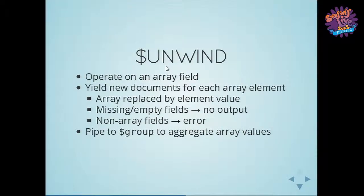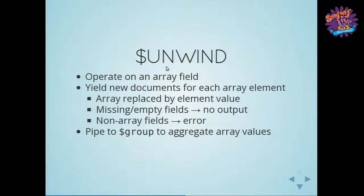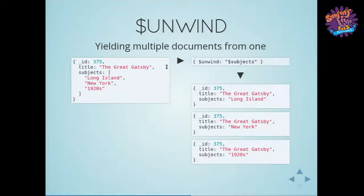Unwind is completely useful for any time you have to aggregate array fields. Going back to the original example where each book had an array of tag strings — subjects. Unwind on a particular array field means documents coming out have the array replaced by each element in the array. If the field was missing there's no output; empty array also produces no output; it would be an error on an integer field. Typically you unwind and then pipe results to a group so you can group by array values. A book with three different subjects — one document going into unwind results in three documents coming out.